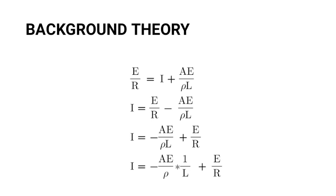The only variables in this equation are I and L. E (EMF of the cell), R (total resistance), A (cross-sectional area), and ρ (resistivity) are all constants. Rearranging: I = (AE/ρ)(1/L) + E/R. From this equation, AE/ρ gives the slope, and the slope is going to be negative. This is different from previous years where you would have a positive slope — in this circuit, the slope is negative.